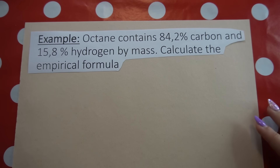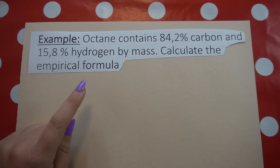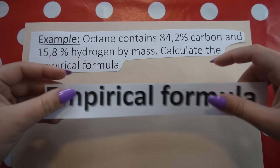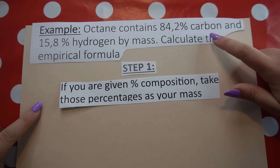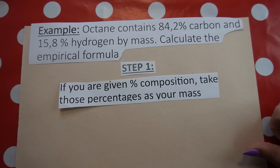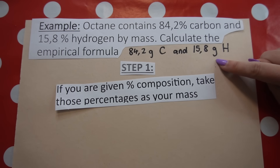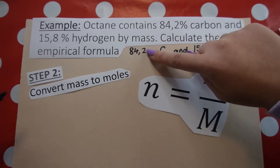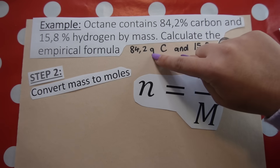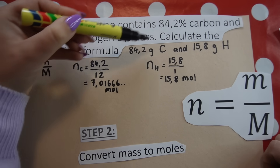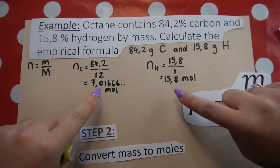Example two: octane contains 84.2% carbon and 15.8% hydrogen by mass. Calculate the empirical formula. Following the same six steps — step one: take percentages as mass, giving 84.2 g carbon and 15.8 g hydrogen. Step two: convert to moles by dividing each mass by the atomic mass from the periodic table.